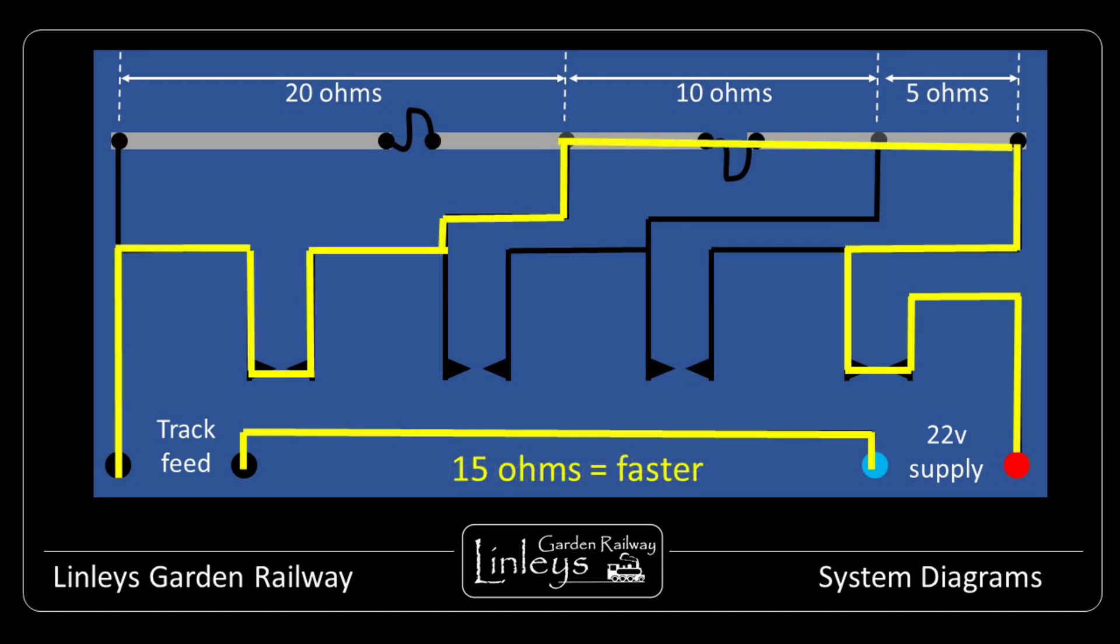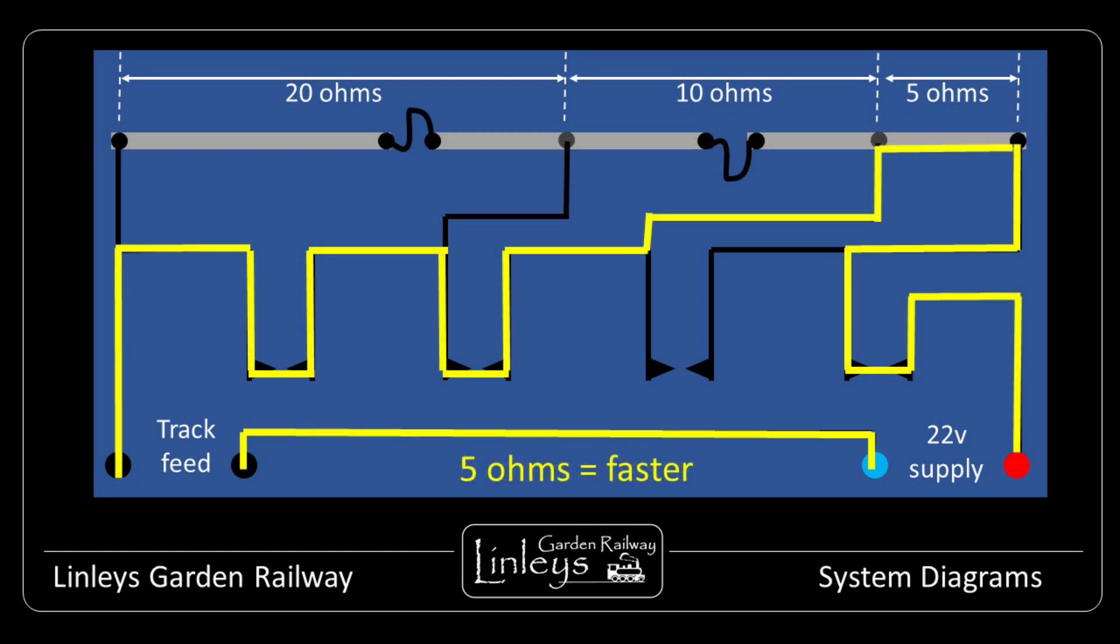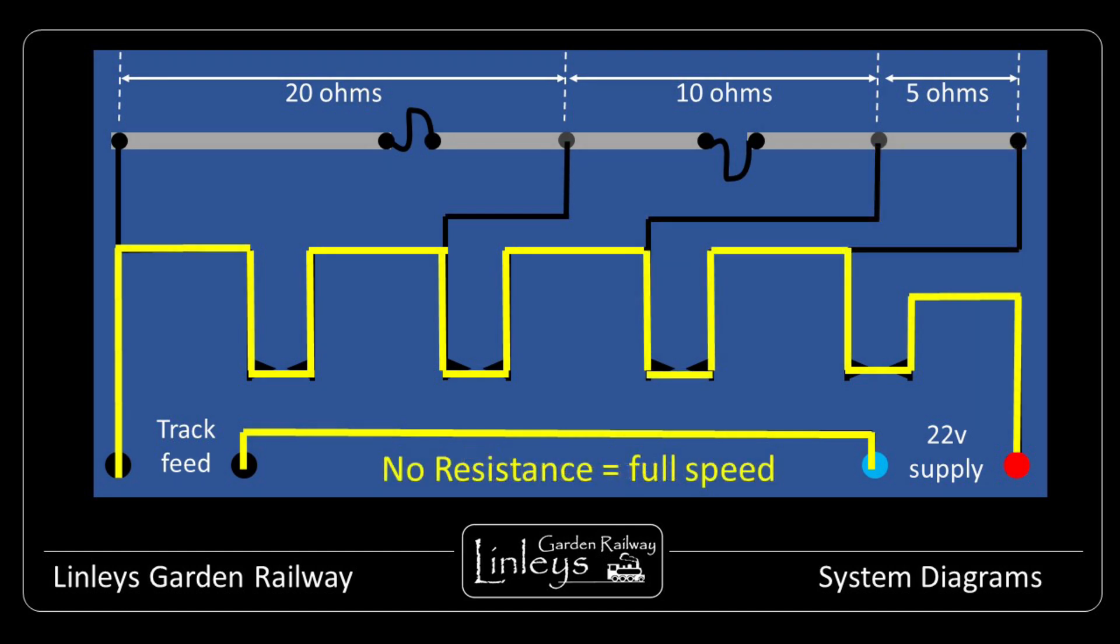In the program running in the module's current version, I have set up an acceleration sequence which has 8 stages of resistance reduction, and this produces a reasonably realistic, smooth, and progressive increase in speed.